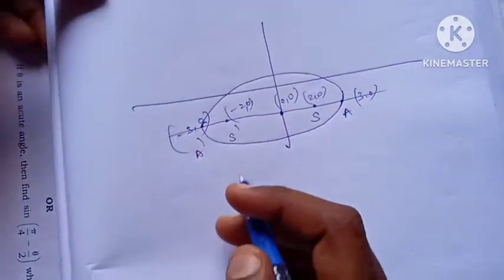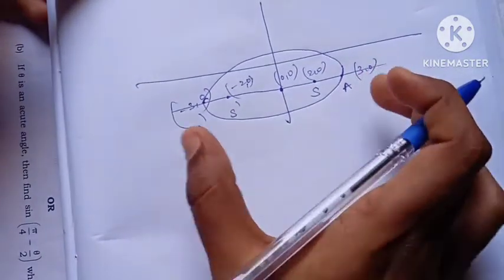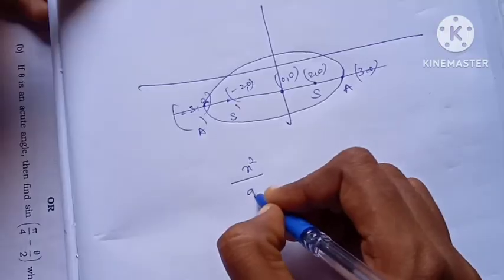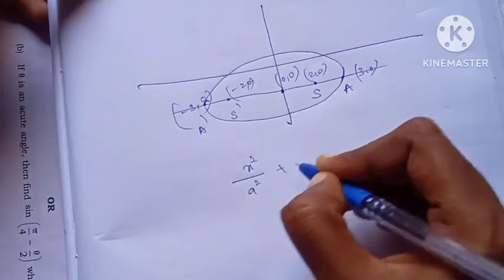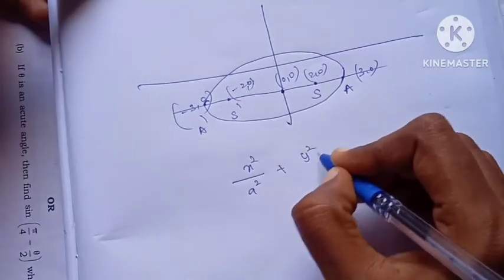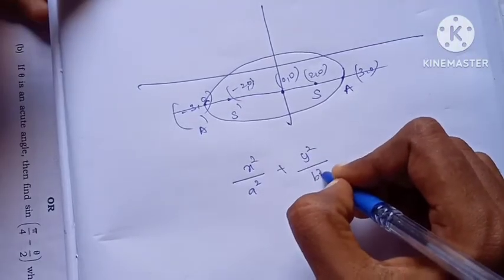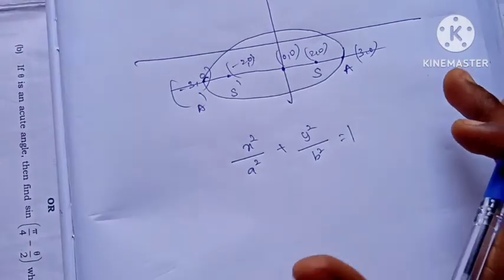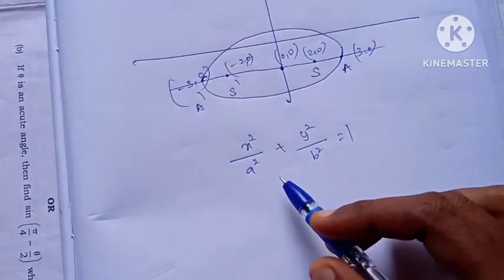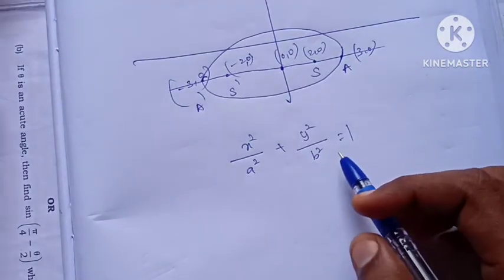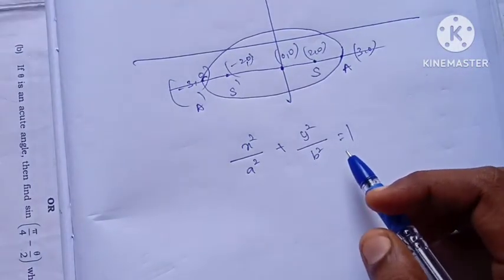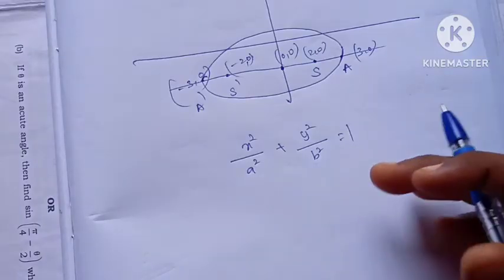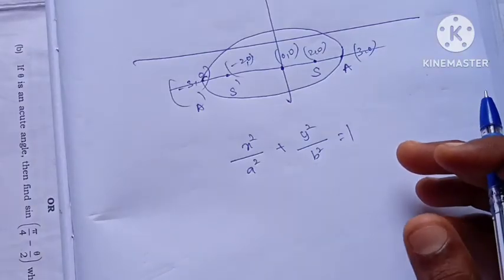The standard equation of the ellipse is equal to 1. If we find the equation, we will find the a value and b value — that is, a squared value and b squared value — and we will find out the equation.